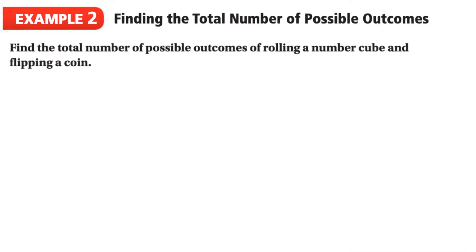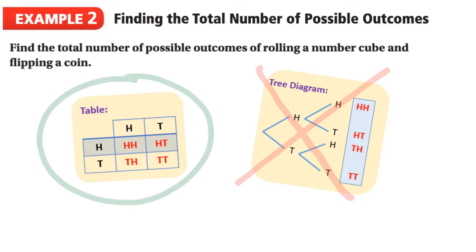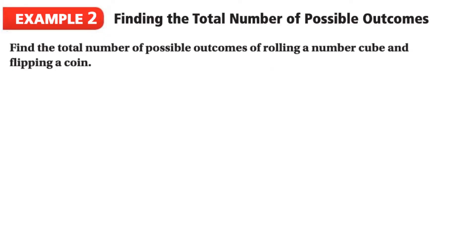In our second example, we're going to be finding the sample space to help us determine the total number of possible outcomes. Unlike the last example, instead of a tree diagram, we're going to use a table. In this question it says, find the total number of possible outcomes of rolling a number cube, so a regular dice, and flipping a coin.